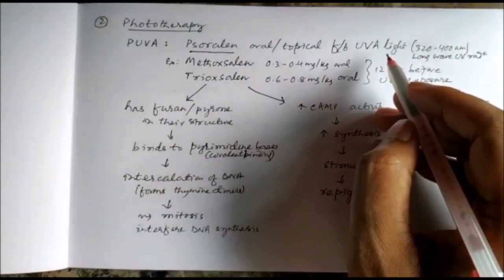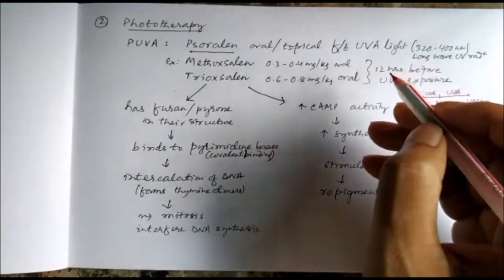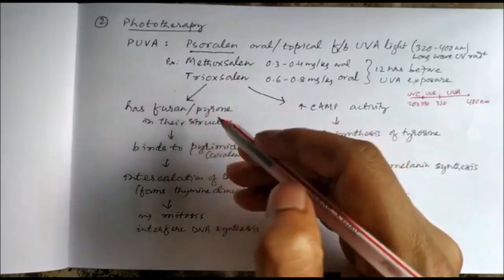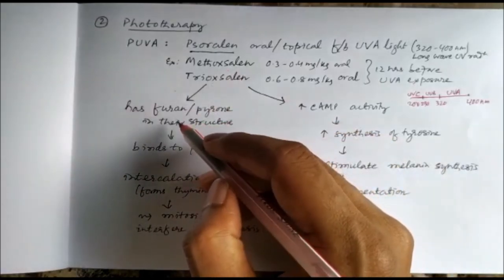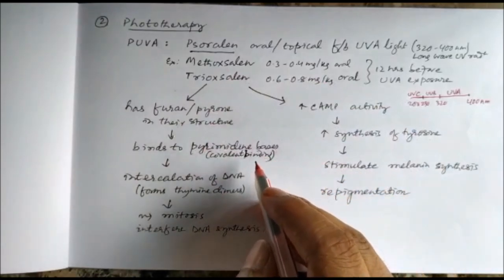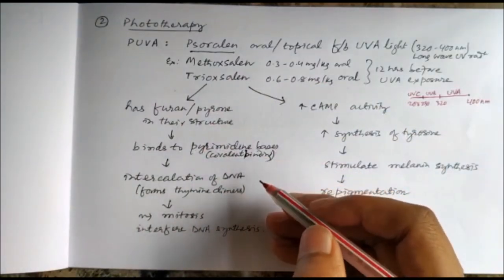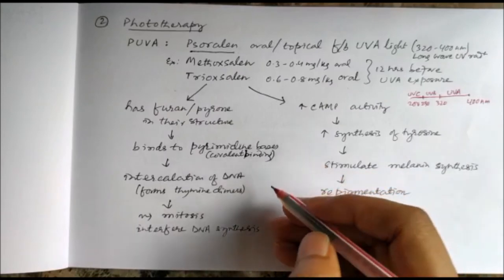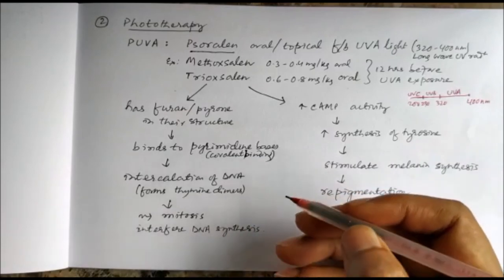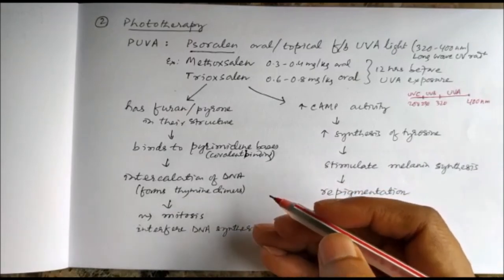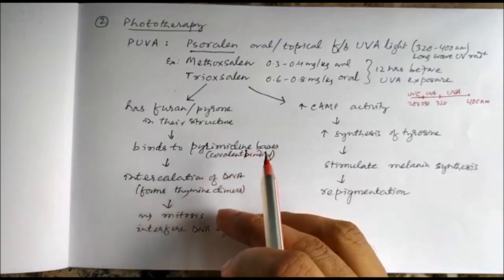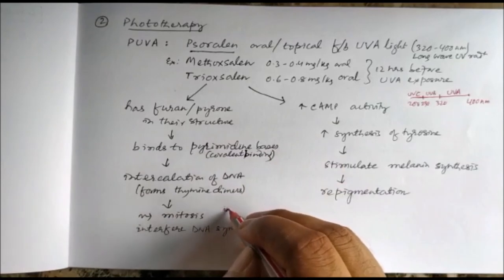What these psoralens do: they have in their structure a furan or pyrone which binds to the pyrimidine bases through covalent binding and causes intercalation of DNA. Mostly there will be formation of thymine dimers, so it will interfere with DNA synthesis and mitosis. It will be cytotoxic and have immunosuppression action.